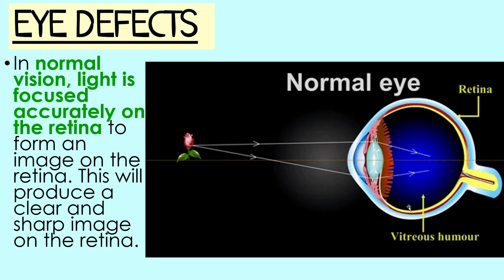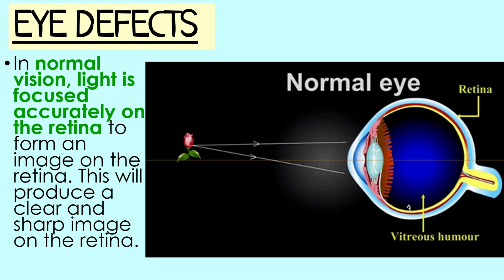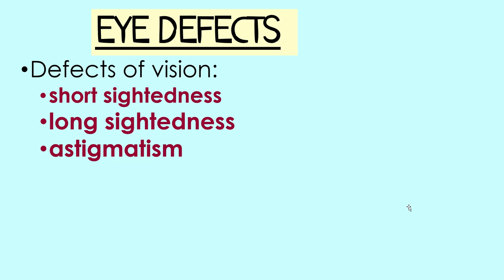However, for a person with defective vision, light rays are not focused exactly on their retina. Thus, the images formed on the retina are blurred. The two most common defects of vision are short-sightedness and long-sightedness. There is another one called astigmatism. These defects usually occur because of watching television or the computer screen being too close, bacteria infection and ageing processes.